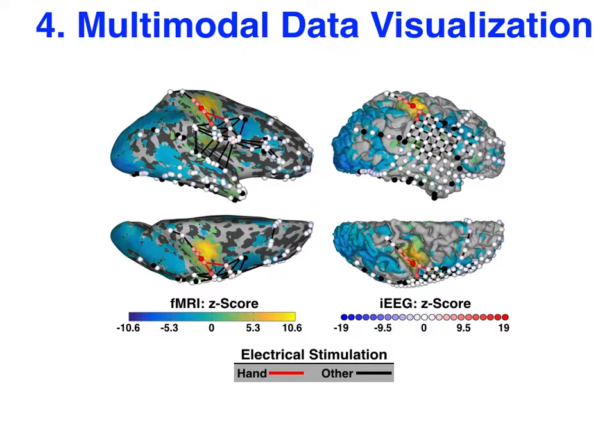Warmer colors indicate greater activity during finger tapping relative to rest. Note that with iELVIS you can take advantage of FreeSurfer methods for inflating the brain to visualize sulcal activity, as illustrated with the brains on the left.